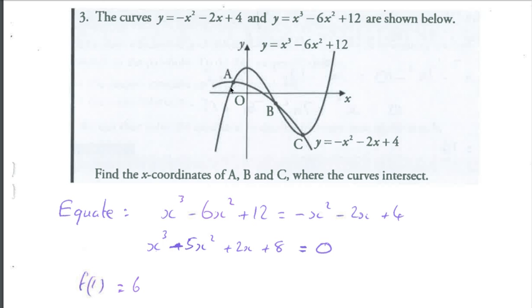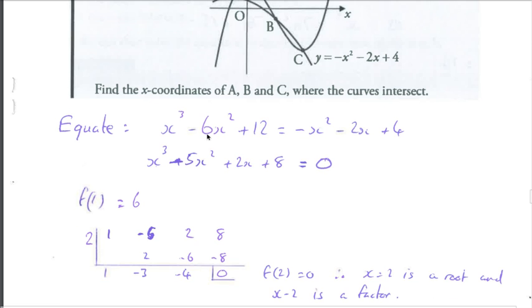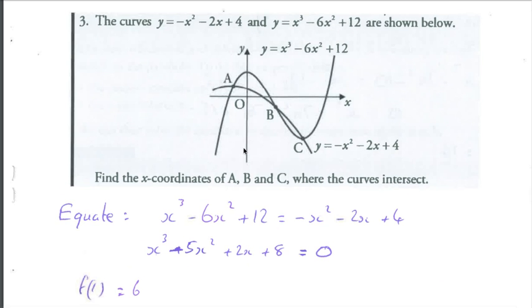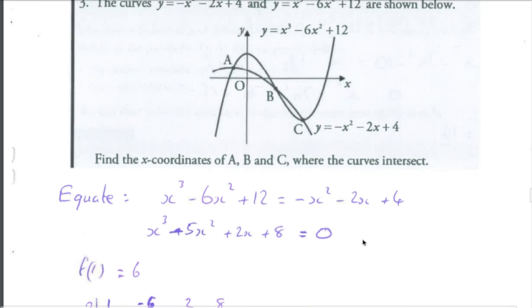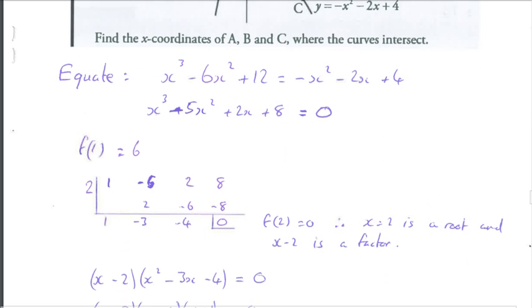So find the x-coordinates of A, B and C. From the diagram we can see there's going to be three separate answers. So equate the two equations, collect them all to one side to equal zero, so we end up with x cubed minus 5x squared plus 2x plus 8.